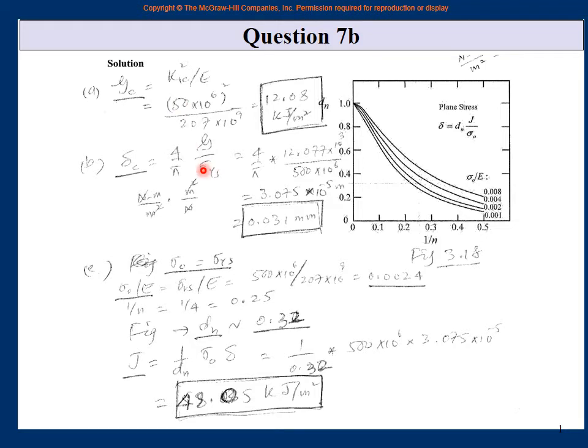If you put the GC value here then this will be critical. So you just plug in those values and you get the answer. If it is kilojoule then this is 10 raise to 3, if it is mega then it's 10 raise to 6. So you get 3.075 into 10 raise to minus 5 meter.